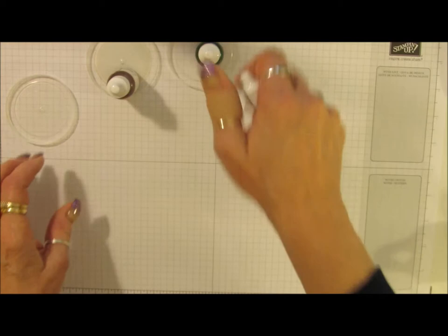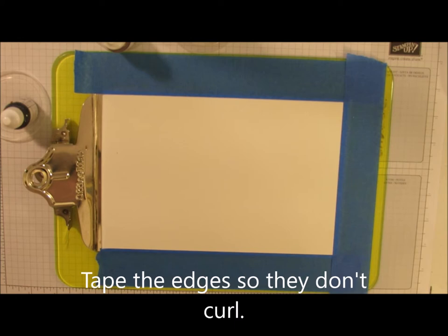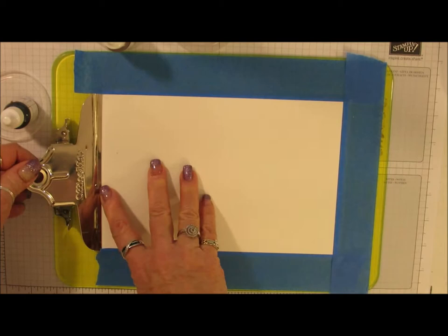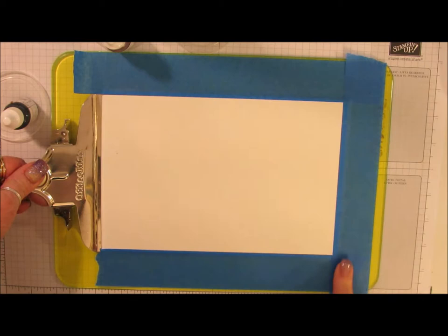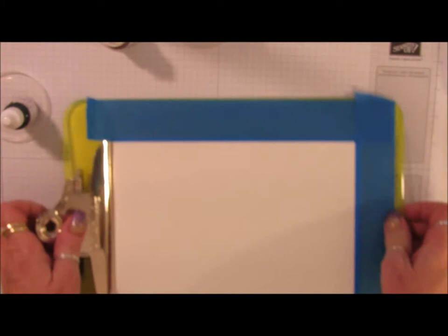First thing you need to do is set up your watercolor paper. I taped it down to a clipboard using painters tape. I slid it very slightly under the clip on one end and then I made a border around the rest of the paper with the painters tape. I overlapped the painters tape very little so if I flip it over it doesn't cover much of the paper.